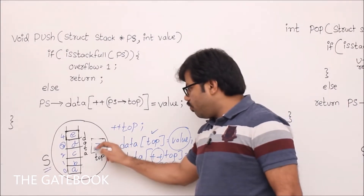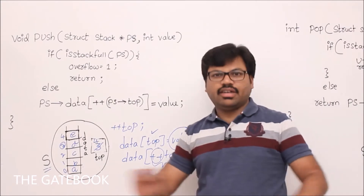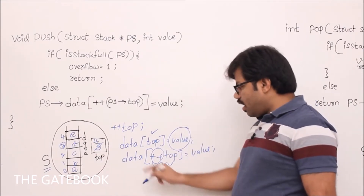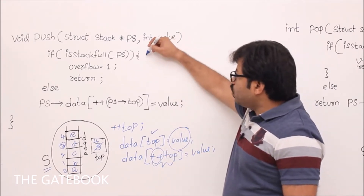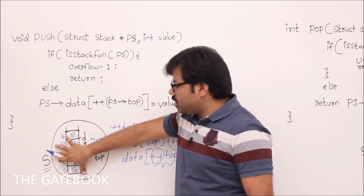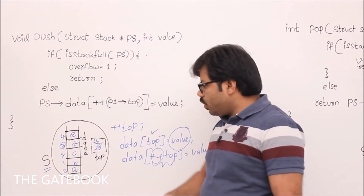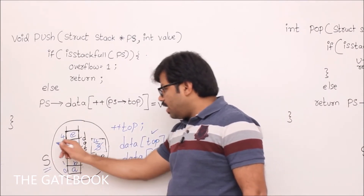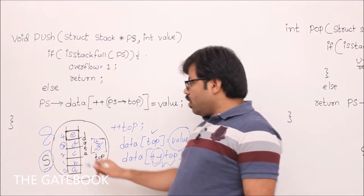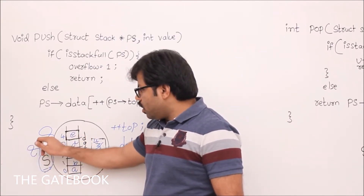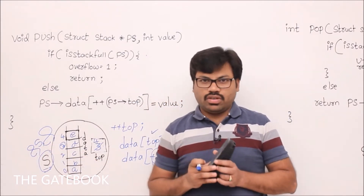So top becomes 4 first, then data[4] = value. But we can't directly access 'data' or 'top' without the structure variable. And being inside the push method, we don't know how to access this stack. That's why whoever calls push passes the address of the structure. The structure name is S, so in the push call there should be address of S.